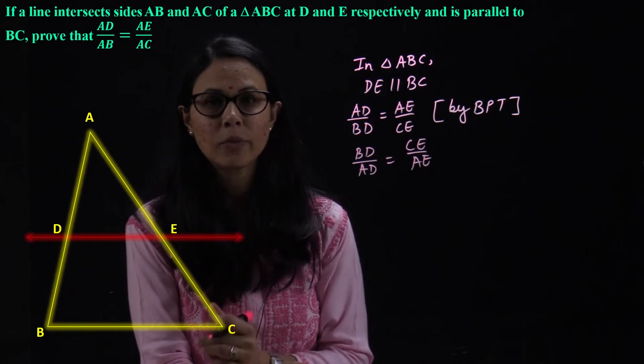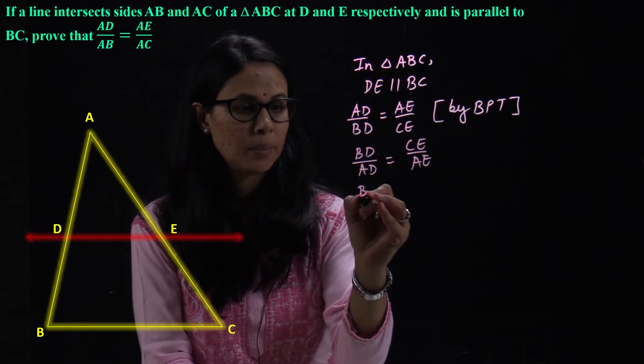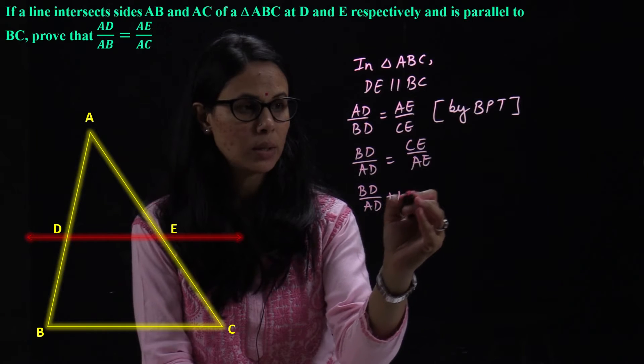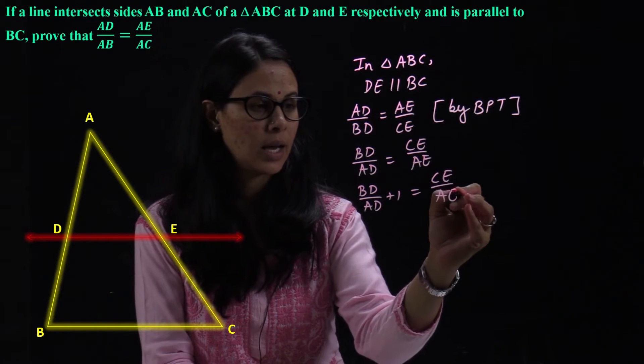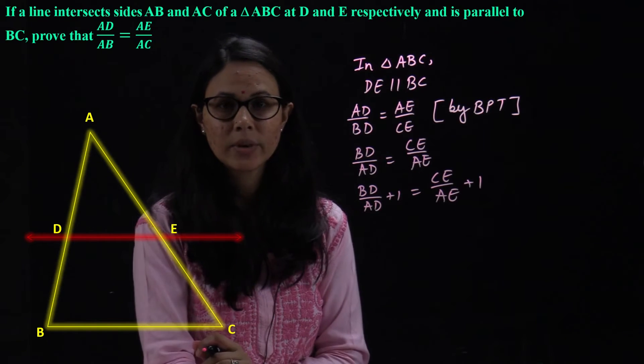Now, on both sides, we add one. So, BD upon AD plus 1 is equal to CE upon AE plus 1. Right?